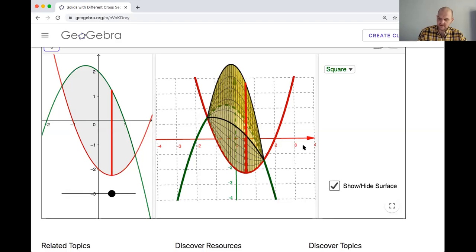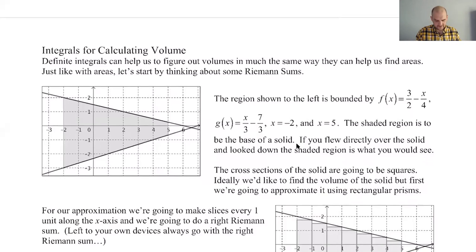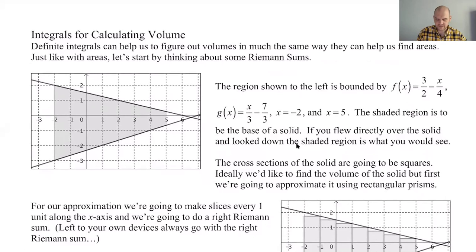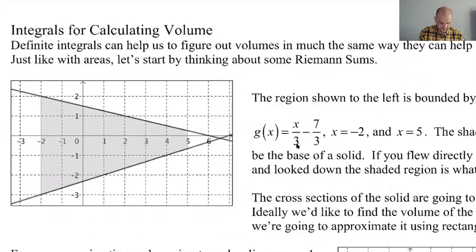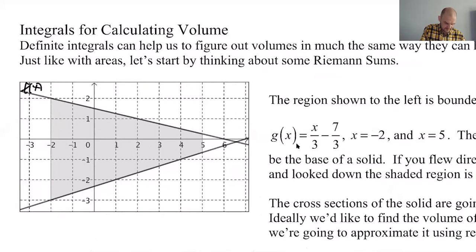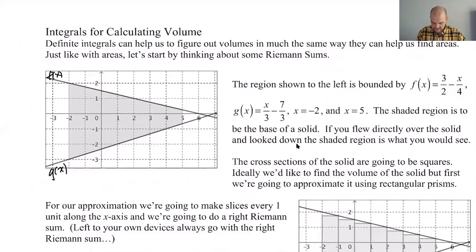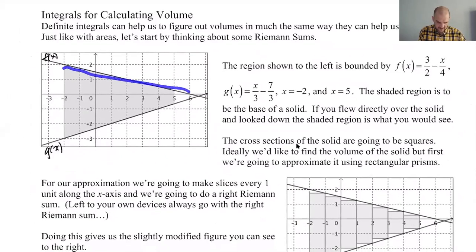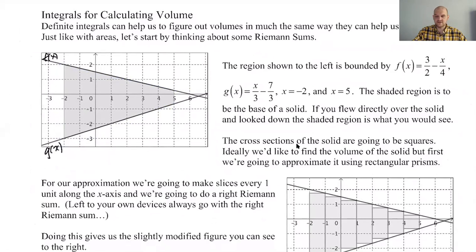Think of cakes — all these shows where you're baking crazy-shaped cakes. That's what we're doing. So here's the concept: we have f(x) as the top curve and g(x). This region is going to be the base of essentially the cake that we're going to make. We want to make a cake where all of the cross-sections, when we slice it, are going to be squares. Let's think about how we could approximate the volume of that, and then we'll get the exact value.